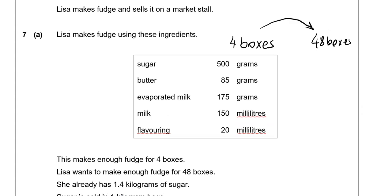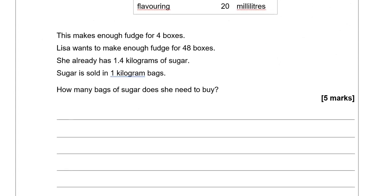To get from 4 boxes to 48 boxes, how many times bigger is 48 than 4? So we can do 48 divided by 4 which gives us 12. So we've multiplied 4 by 12 to get 48. We can do this with all of the ingredients, but we're only interested in the sugar. So times 12. 500 times 12 gives us 6,000, and that is grams. Because we input grams, and 6,000 grams is equal to 6 kilograms.